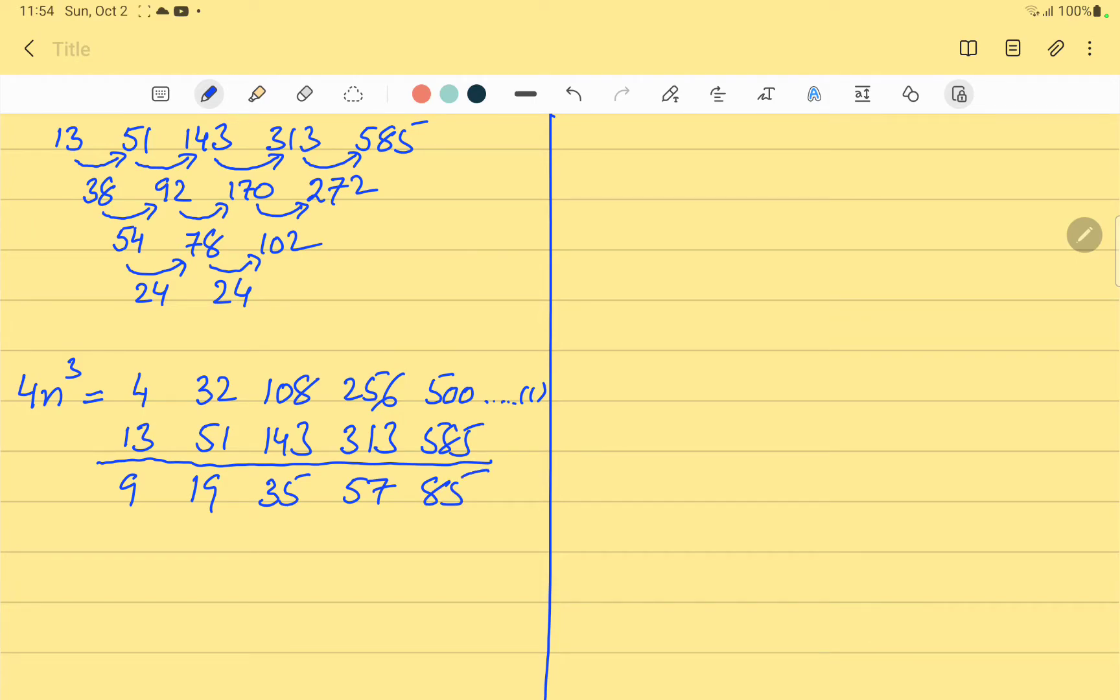Since the differences of the resultant series are not the same, we will go one step further and calculate these again. So 9 minus 19 will be equal to 10. 19 minus 35 will be equal to 16. 35 minus 57 will be equal to 22. And the last one which is 85 minus 57 is 28. We can see that the differences are not the same even now. So we find these one more time.